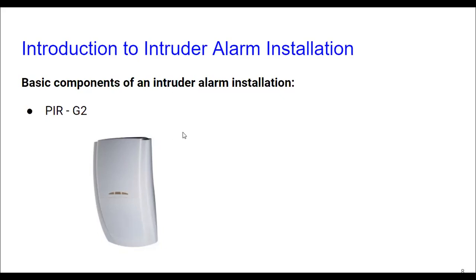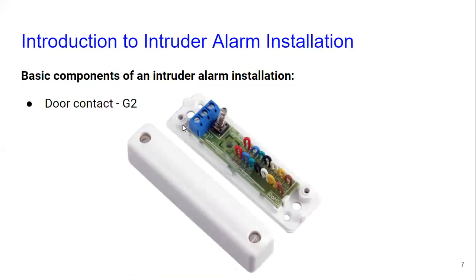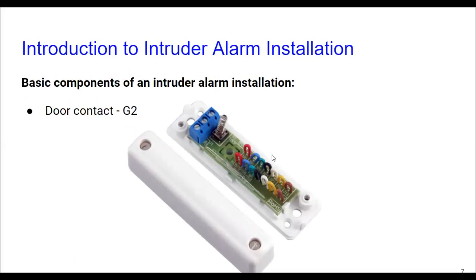Looking at the basic components of an alarm system, the most common detectors are motion detectors — which is basically PIR — door contacts, and panic alarms. You can also have water leakage detectors, vibration detectors, and glass break detectors. There are quite a few types, and we're going to look into the principle of how they work.